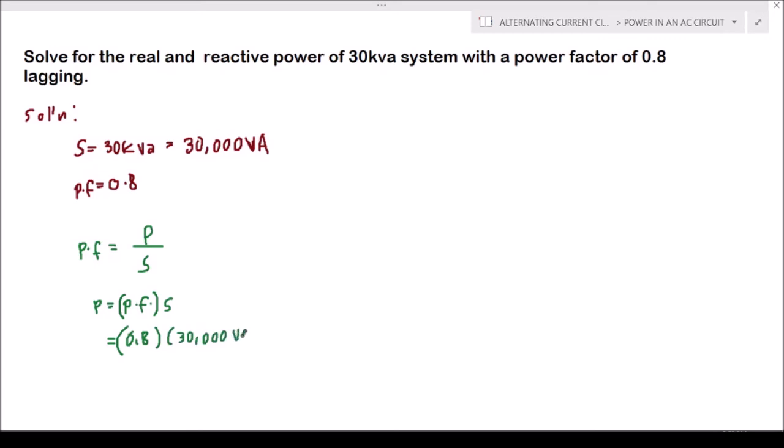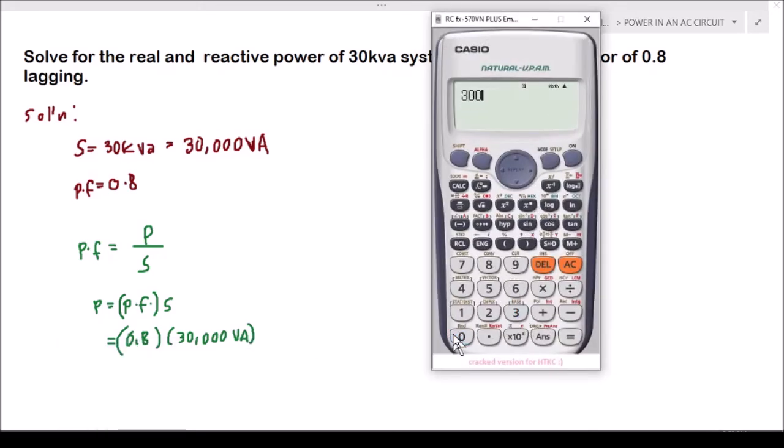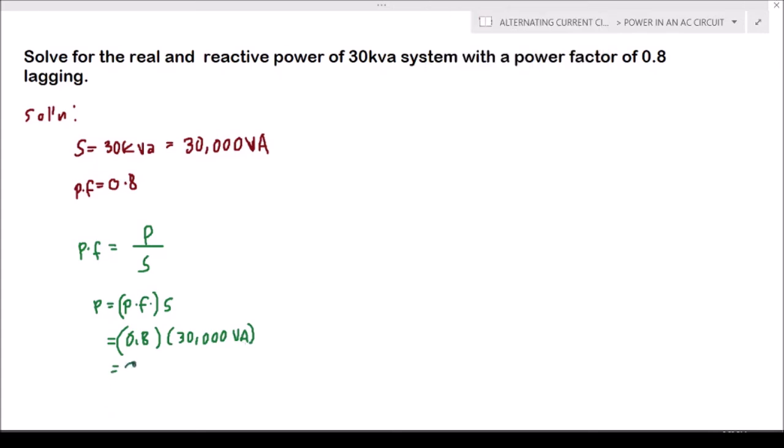Okay, so we will use our calculator. 30,000 times 0.8, so this will be equal to 24,000 watts. 24,000 watts, or this will be equal to 24 kilowatts.